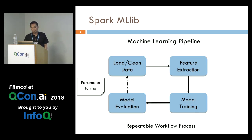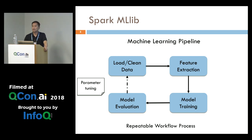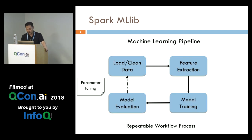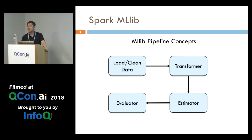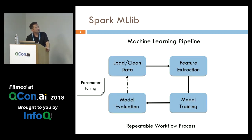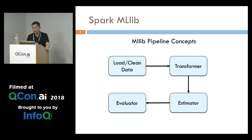This is a very simplified workflow of doing machine learning: load and clean data, feature extraction, model training, evaluation, and then rinse and repeat depending on what you're doing. Spark helps with this flow by providing a few abstractions that mirror pretty much each of those steps. It provides a transformer and an estimator — those are the key terminologies in the Spark MLlib landscape.